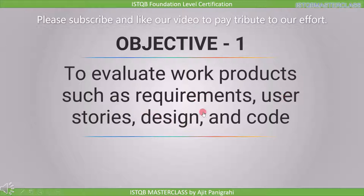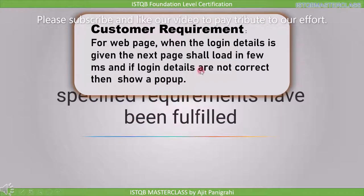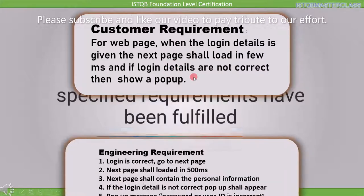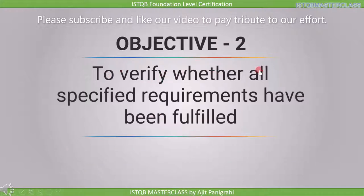The second objective is to verify whether all specified requirements have been fulfilled. After analyzing the customer requirement and asking questions, the engineering requirement includes: login correct — go to the next page; next page shall load in 500 milliseconds; next page shall contain personal information; if login detail is not correct, a popup shall appear with the message 'password or user ID is incorrect.' So in each stage we verify whether all specified requirements have been fulfilled.